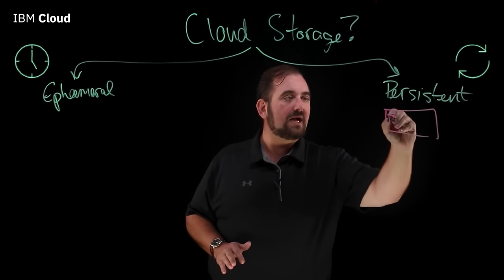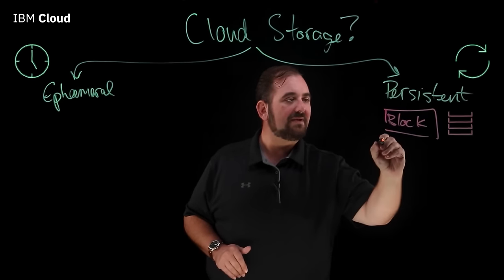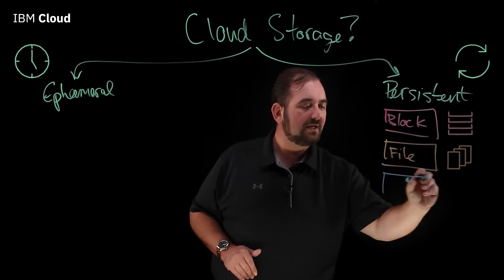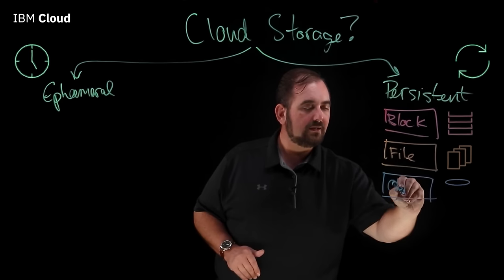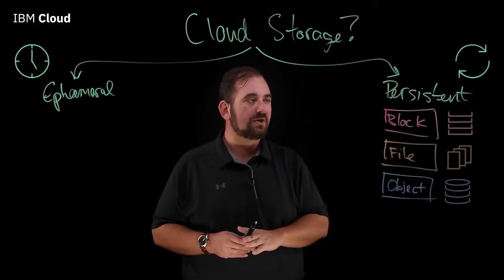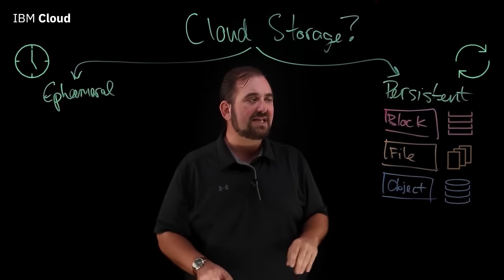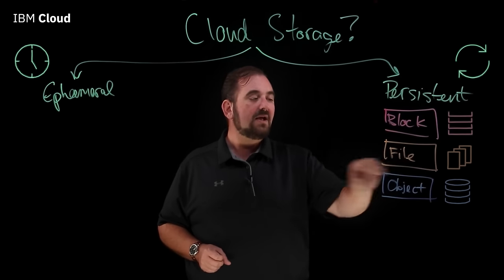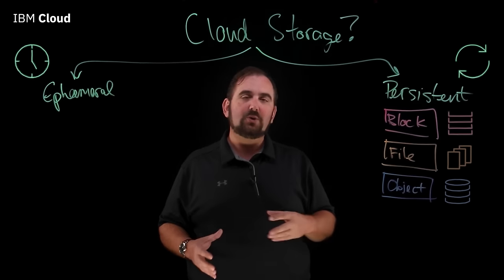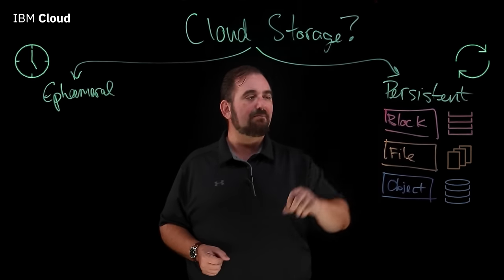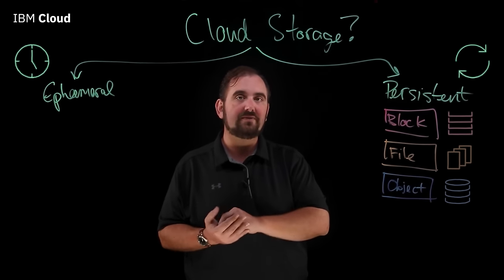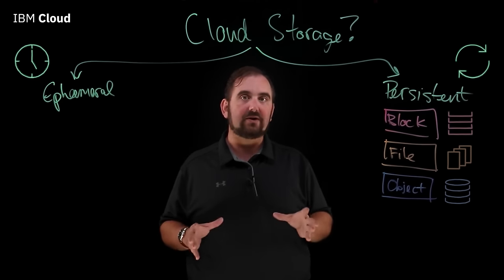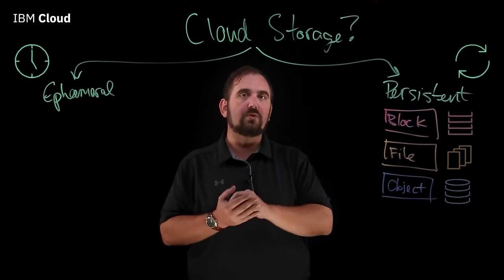I'm going to break persistent storage into three fundamental pieces: block, file, and object — these are far and away the most common kinds of cloud storage. Each has its own underlying technologies. The way that block mounts to a device is different from how file mounts to a device. Object doesn't actually mount to a device at all — you interact with object storage via an API, whereas a block storage device is generally attached to the virtual server through the hypervisor. You can attach and detach block file shares whenever you need to, but it goes through that hypervisor layer.